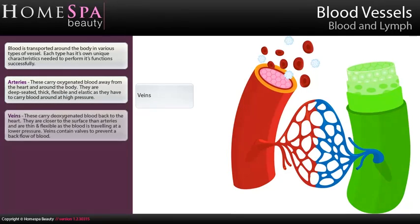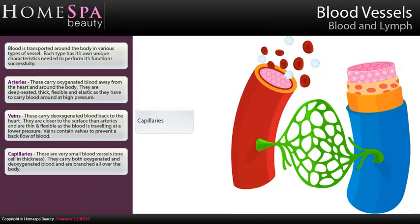Veins carry deoxygenated blood back to the heart. They are closer to the surface than arteries and are thin and flexible as the blood is travelling at a lower pressure. Veins contain valves to prevent a backflow of blood. Capillaries are very small blood vessels, one cell in thickness. They carry both oxygenated and deoxygenated blood and are branched all over the body.